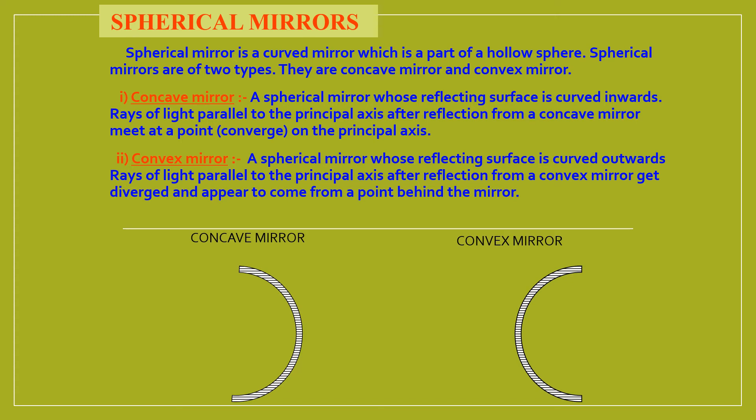Concave mirrors are spherical mirrors whose reflecting surface is curved inwards. That means this is the reflecting surface. And when rays of light parallel to the principal axis after reflection from a concave mirror meet at the point or converge on the principal axis.